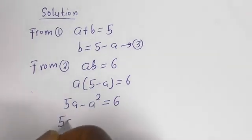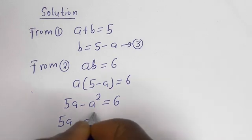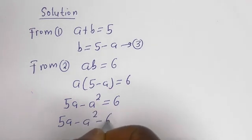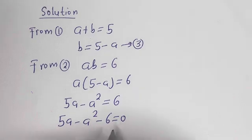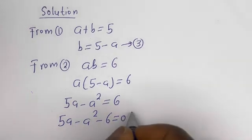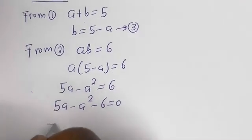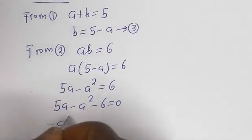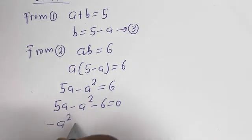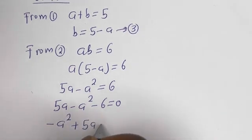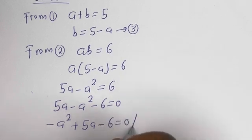Rearranging: 5a minus a squared minus 6 is equal to 0, which is minus a squared plus 5a minus 6 is equal to 0.